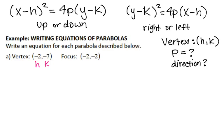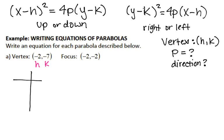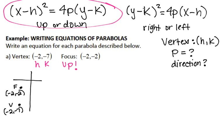Sometimes it's helpful to actually plot these points. So negative 2, negative 7 would be somewhere down here, and my focus at negative 2, negative 2 would be somewhere over here. Once you have this visual, you can see how your graph is going to open, because your parabola always opens towards the focus. Starting at my vertex and going towards my focus means this parabola is opening up. Since my parabola is opening up, I know I'm going to use the equation x minus h quantity squared equals 4p times y minus k.